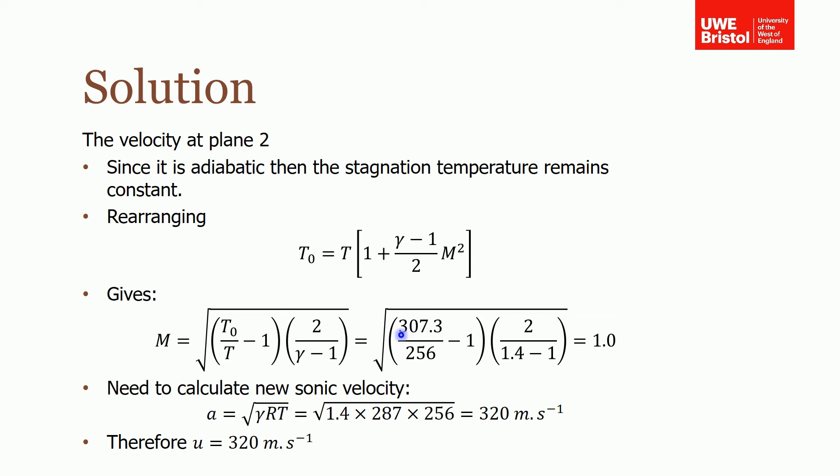We know the stagnation temperature from the previous slide: 307.3 Kelvin. Put in our new temperature in Kelvin at plane 2, which was minus 17 degrees C, giving 256 Kelvin.